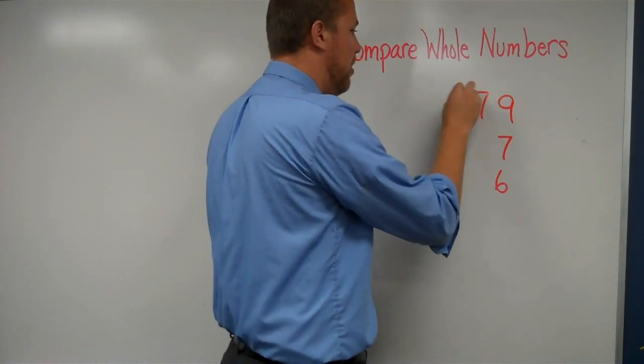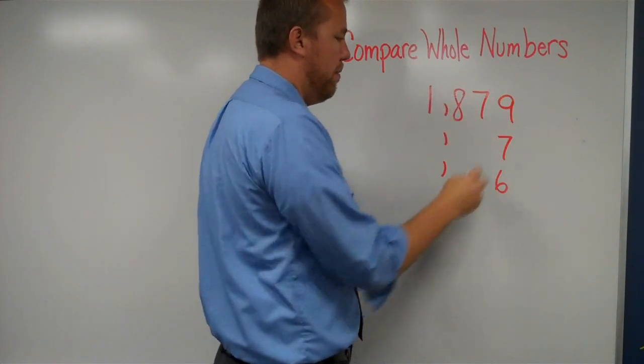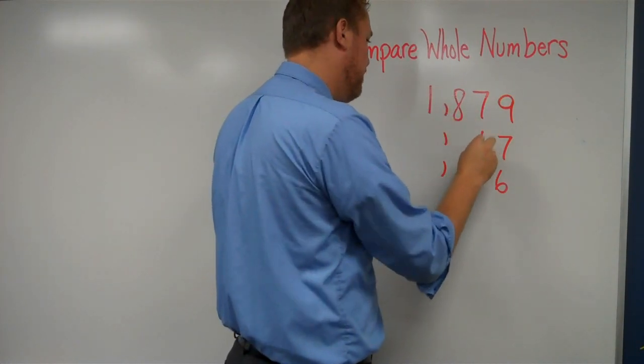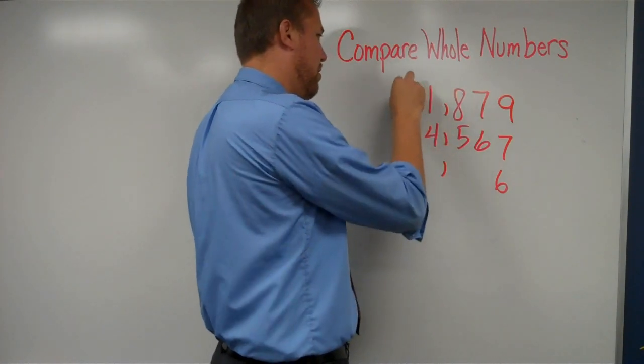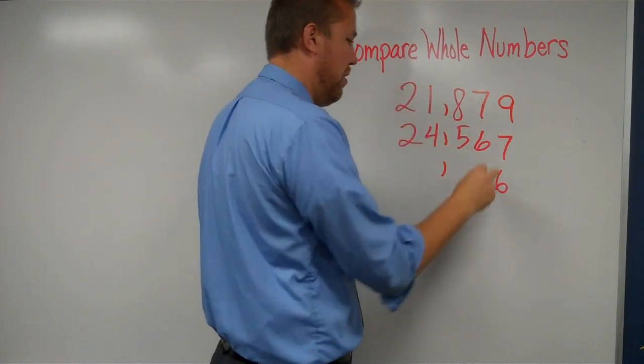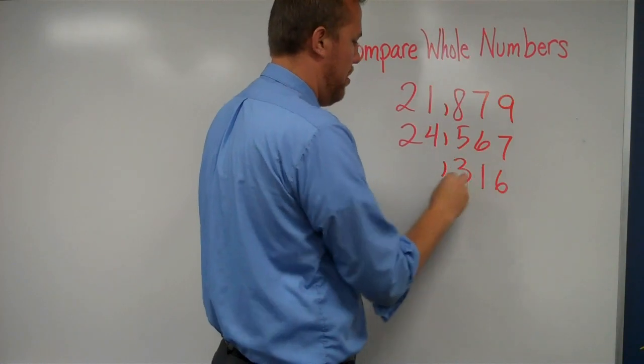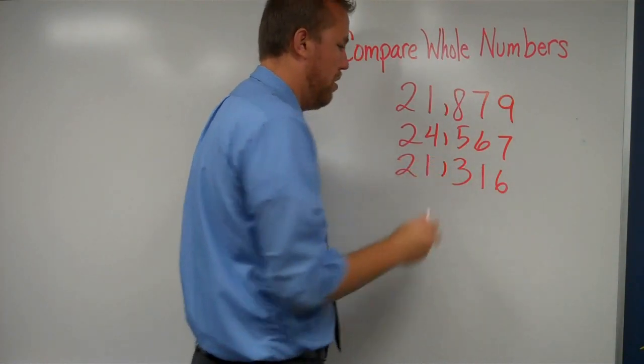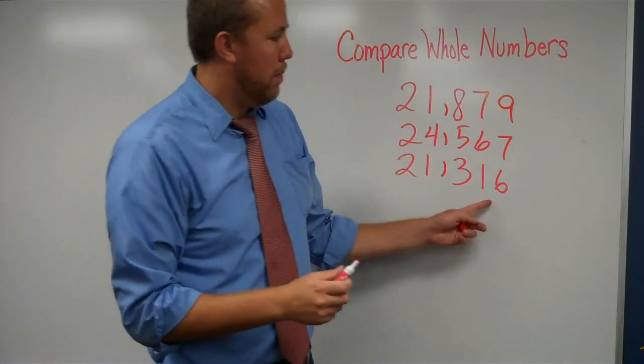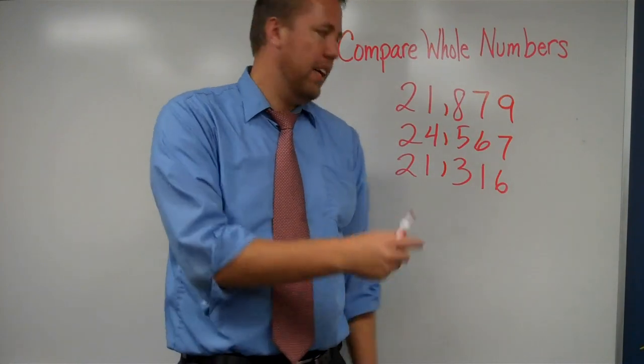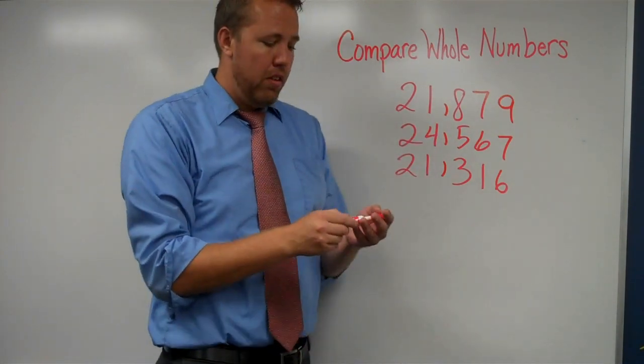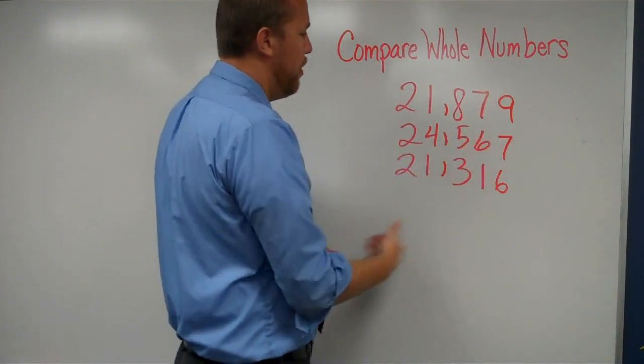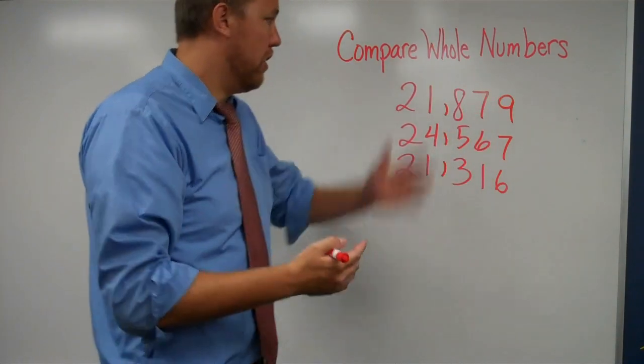So these bigger numbers, we notice as we line them up according to the ones place, the commas line up as well. And then we just, once we've lined it up, we just start from the biggest and go to the smallest.